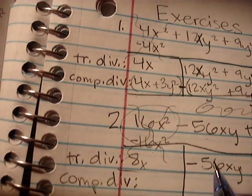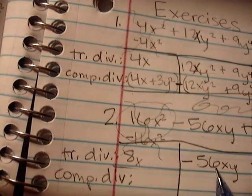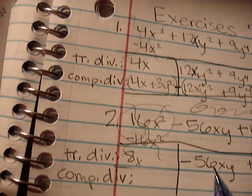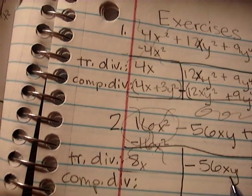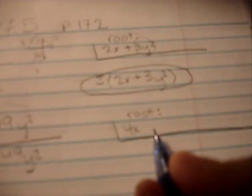So, let's divide the first term of your remainder by 8x. Negative 56 divided by 8 is negative 7x. Well, the x is canceled, so negative 7y. There we go.